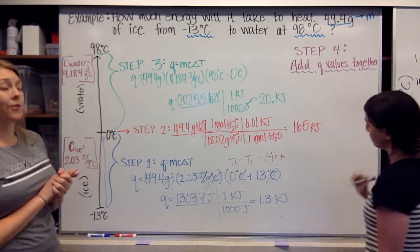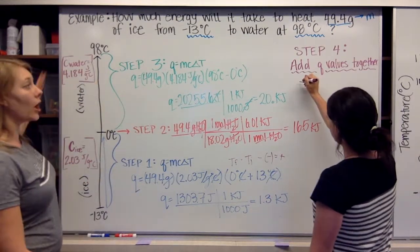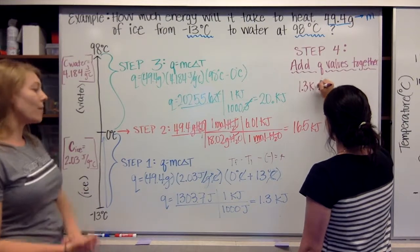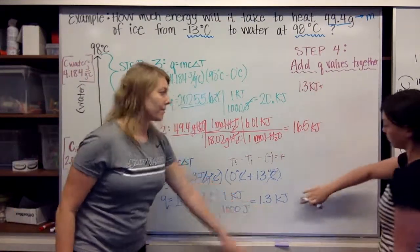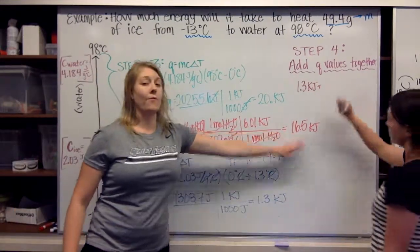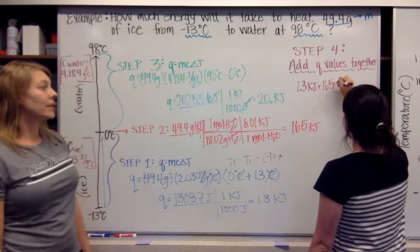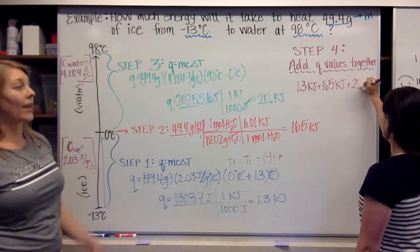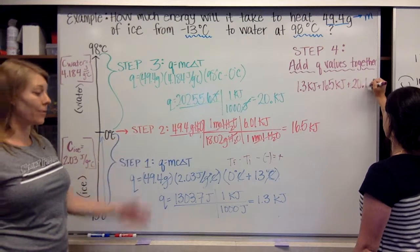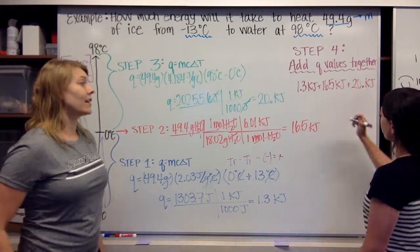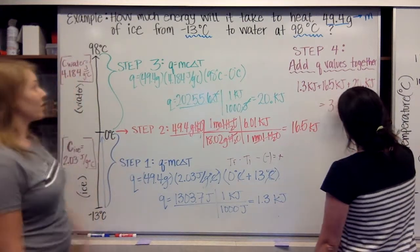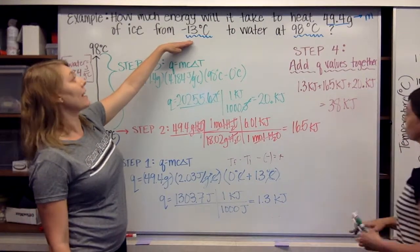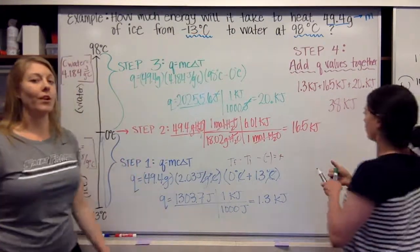Now we're going to add our Q values together to get the overall change in enthalpy: 1.3 kilojoules from step one, 16.5 kilojoules from step two, and 20 kilojoules from step three. We can't have any decimal places here, and we get 38 kilojoules to go from negative 13 degrees Celsius ice to 98 degrees Celsius water.